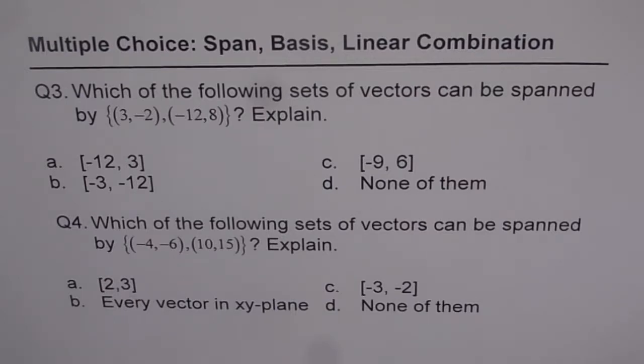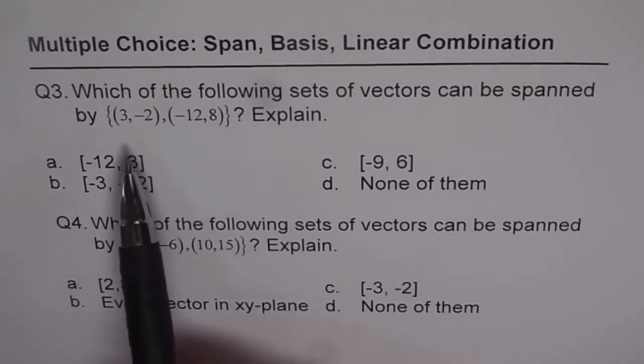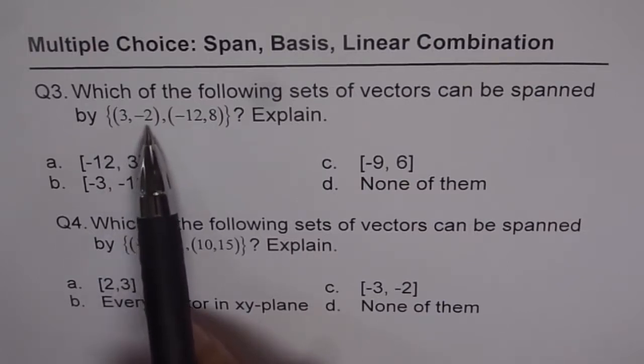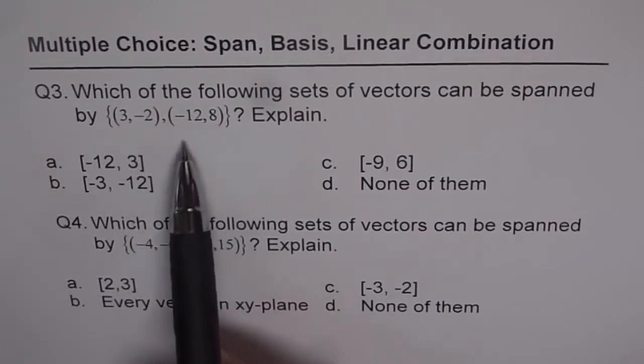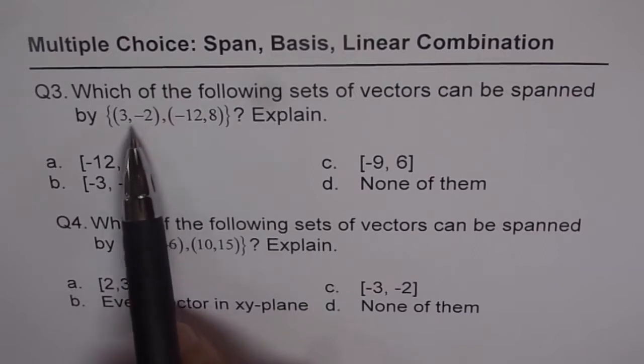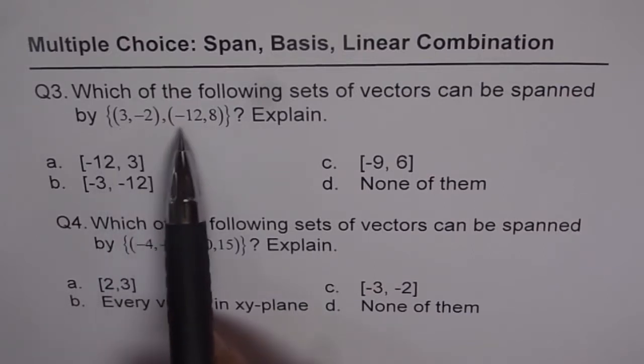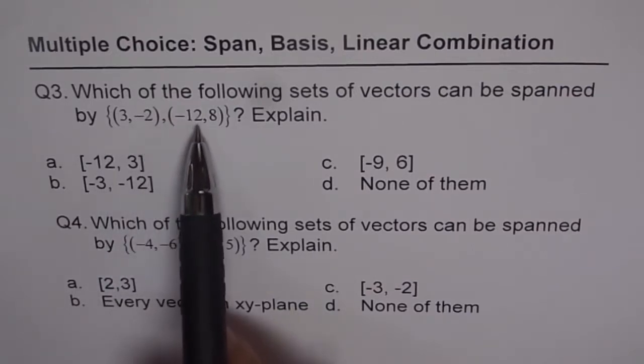Question 3. So we have got a spanning set of {3, -2} and {-12, 8}. Now if you multiply {3, -2} by -4, you get the other one. So they are scalar multiples.